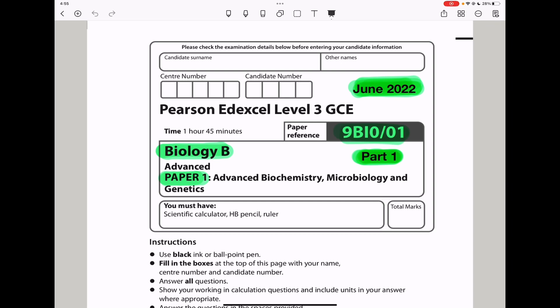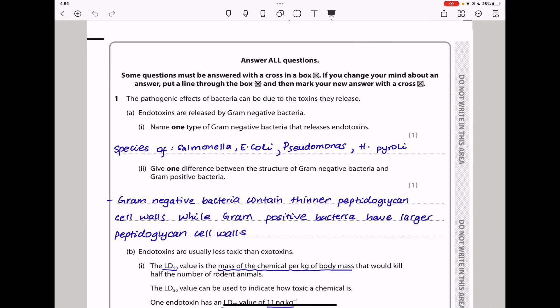Let's begin with Question 1. Question 1 says the pathogenic effects of bacteria can be due to toxins they release. Endotoxins are released by gram-negative bacteria. Name one type of gram-negative bacteria that releases endotoxins. I could say Salmonella, E. coli, Pseudomonas, as well as H. pylori, so any of these would earn you one mark.